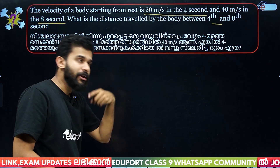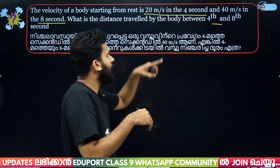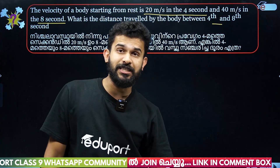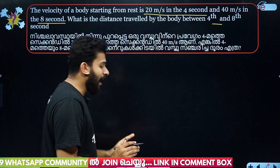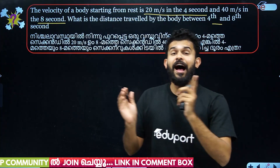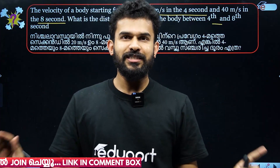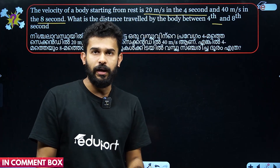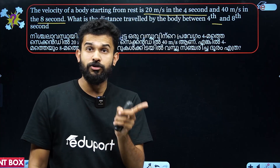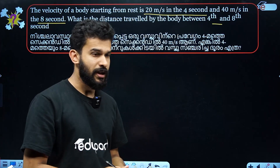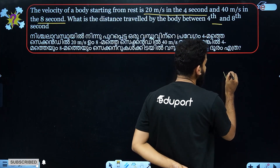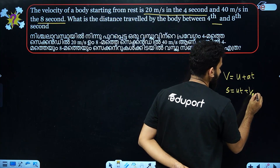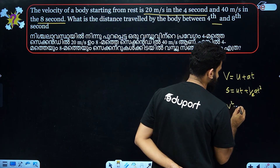There is a problem involving a period of time. The velocity is 20 meters per second in 4 seconds and 40 meters per second in 8 seconds — that means we need the distance at the 4th and 8th seconds. It's not just distance equals velocity times time; we use the equations of motion: v = u + at, s = ut + ½at², and v² = u² + 2as.